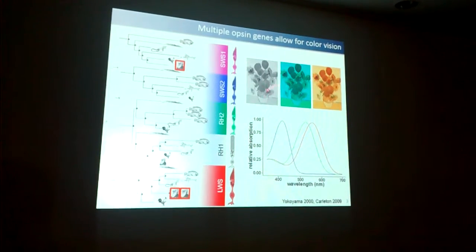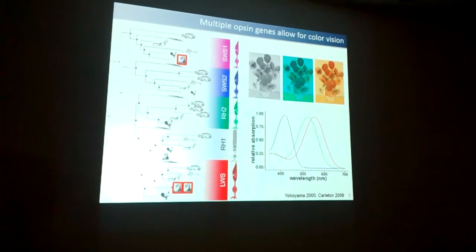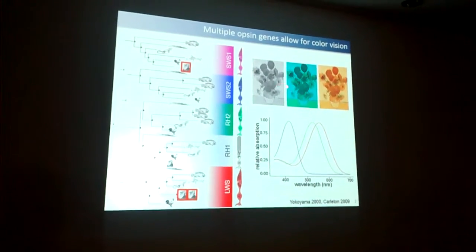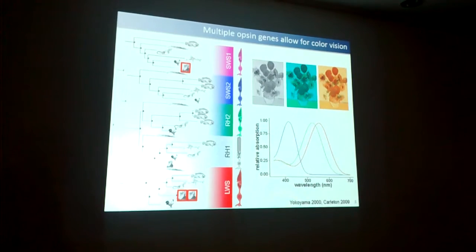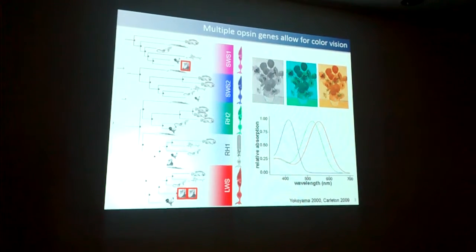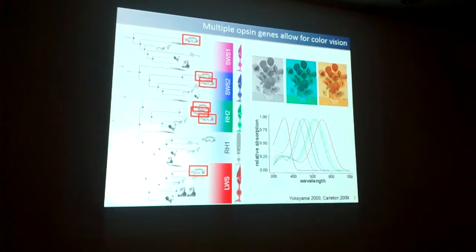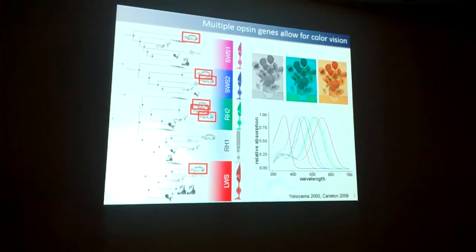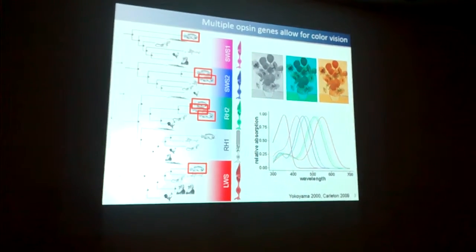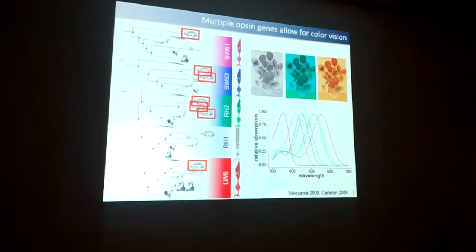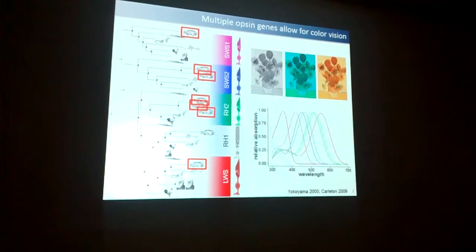Other mammals and some monkeys — especially neotropical monkeys — have dichromatic vision, and some animals have only monochromatic vision. So you can see how important it is to have diversity. Cichlids have seven opsins, but they don't express all seven at the same time — they actually still have a trichromatic vision.